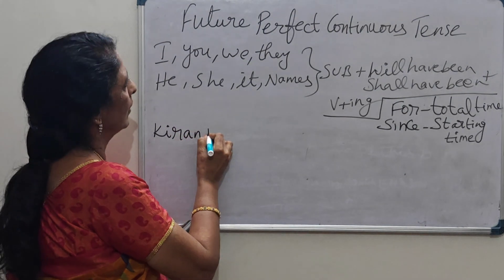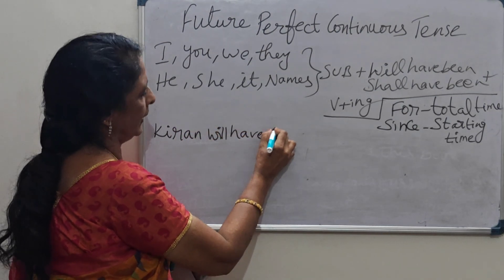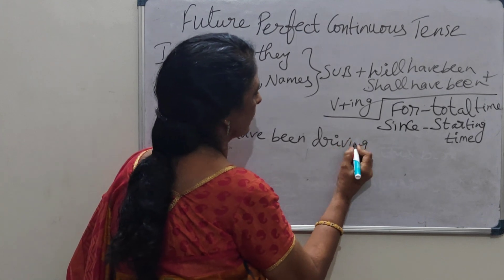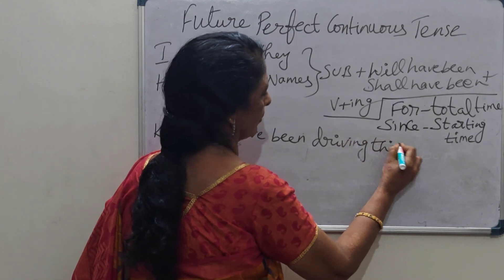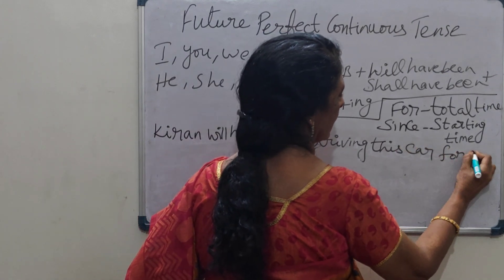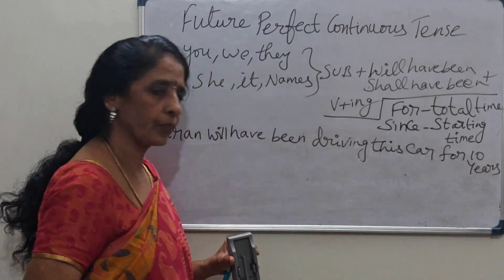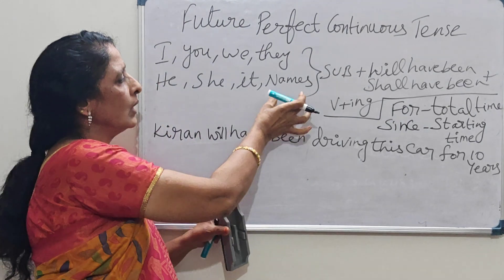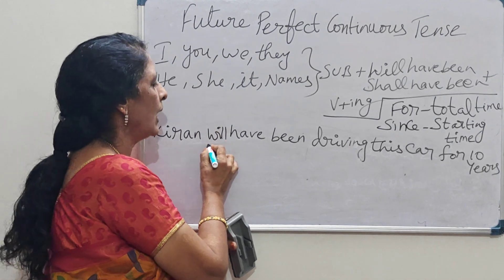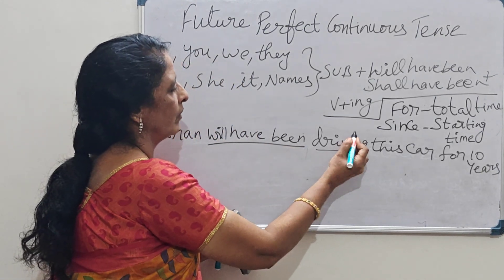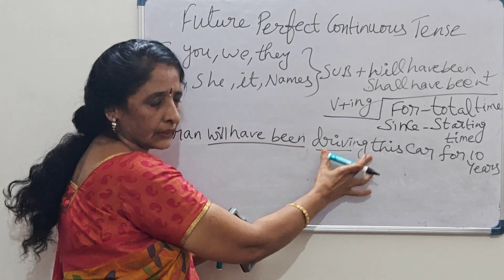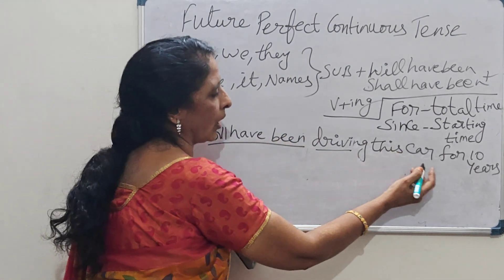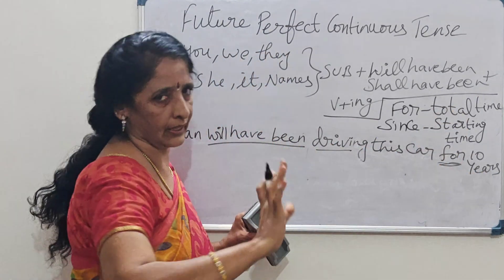Sixth example using a name: 'Kiran will have been driving this car for 10 years.' Here 'Kiran' is the name as subject. 'Will have been driving' is Future Perfect Continuous, 'driving' being verb plus ing, and 'for 10 years' is total time.